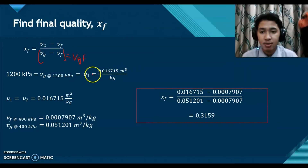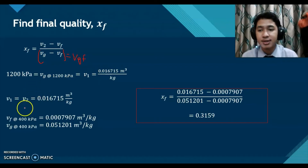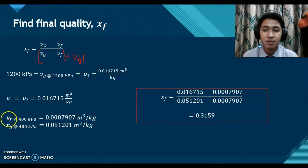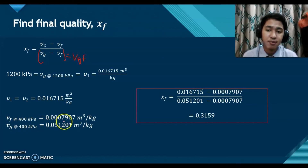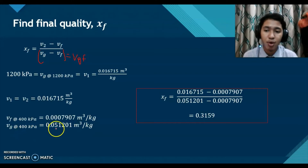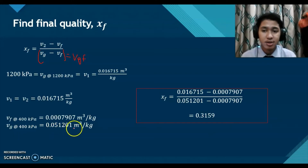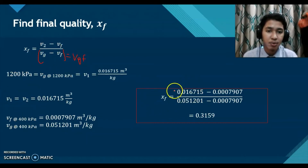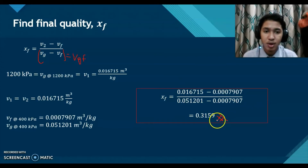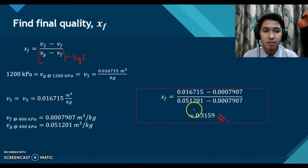From the table at 400 kPa: Vf equals 0.007907 m³/kg and Vg equals 0.051201 m³/kg. Substituting all values into the equation, the final quality X_final equals 0.3159. This value has no unit.